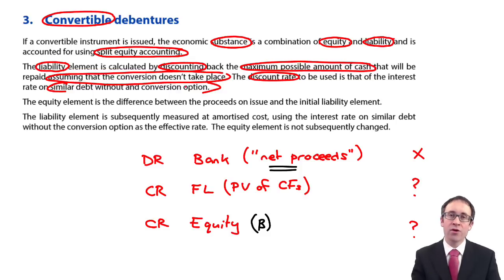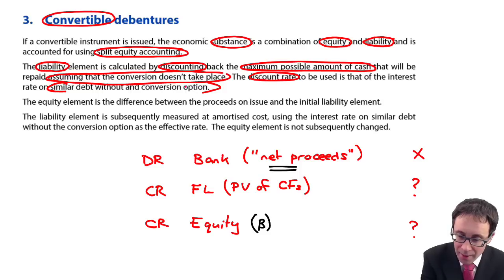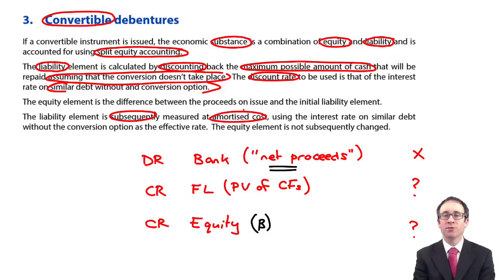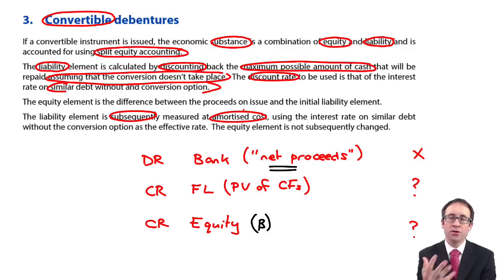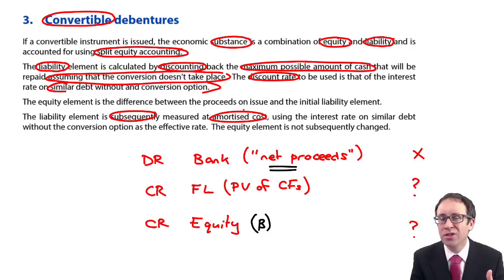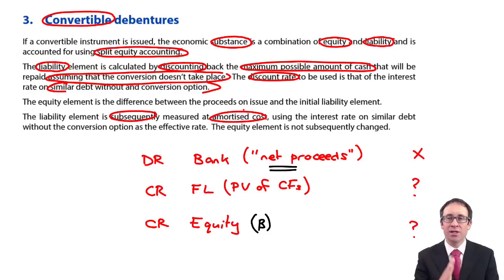Once you've worked out the financial liability by doing the present values, you work out the credit to equity, which is the difference between the proceeds received and the value of the financial liability calculated. Subsequently, the liability is at amortised cost — recording the finance cost using the effective rate of interest and adjusting the outstanding liability for the coupon interest paid. The equity element we just leave as it is once initially recognised.